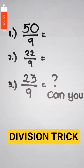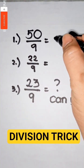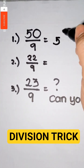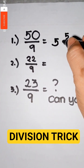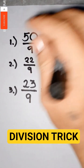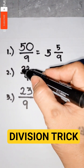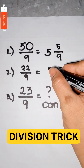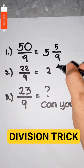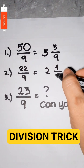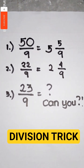So how can we solve this quickly? I will copy the first number 5 and add 5 plus 0 — the answer is 5 — and copy the denominator 9. Next, copy the number 2, then add 2 plus 2 giving me 4, and copy the denominator 9. So can you answer number 3, guys? Thank you.